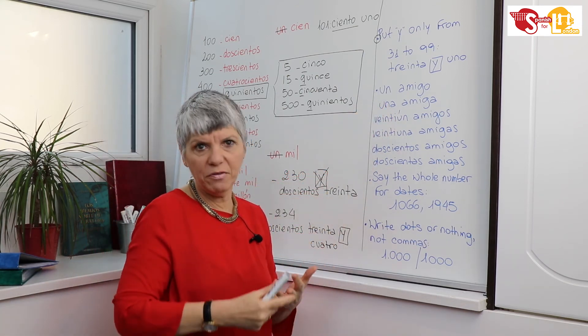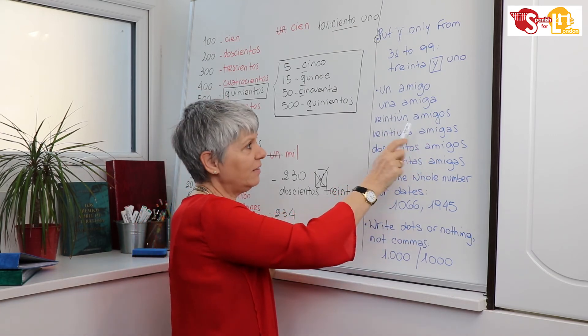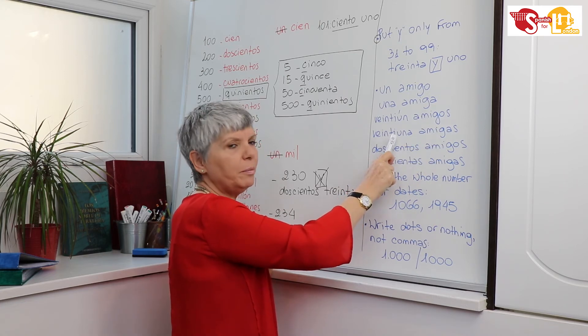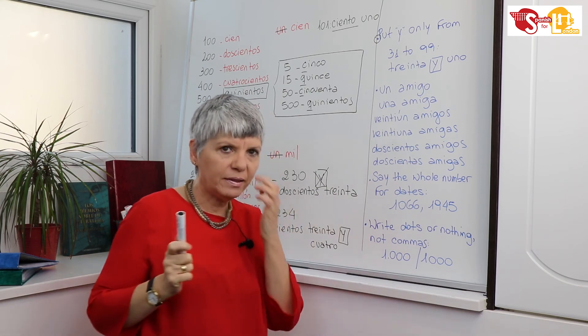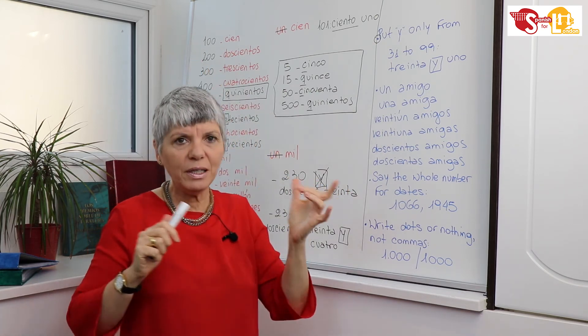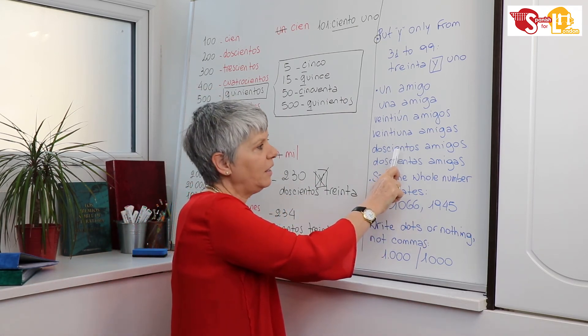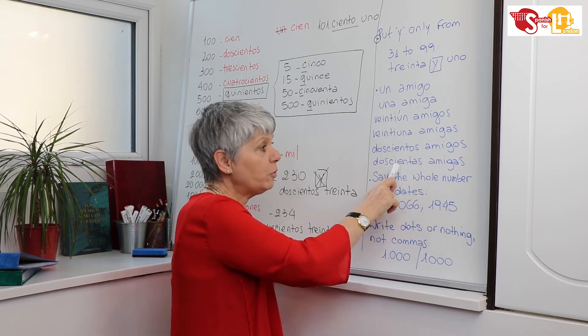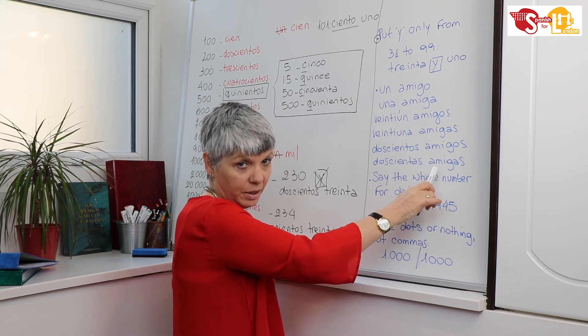And same happens with all the numbers from one: twenty-one, thirty-one, forty-one. So suppose that they have twenty-one male friends, tengo veintiún amigos. I have twenty-one female friends, tengo veintiuna amigas. And same happens with the numbers from cien. They have feminine and masculine. So I have two hundred male friends, tengo doscientos amigos. I'm exaggerating a little. Or I have two hundred female friends, tengo doscientas amigas.